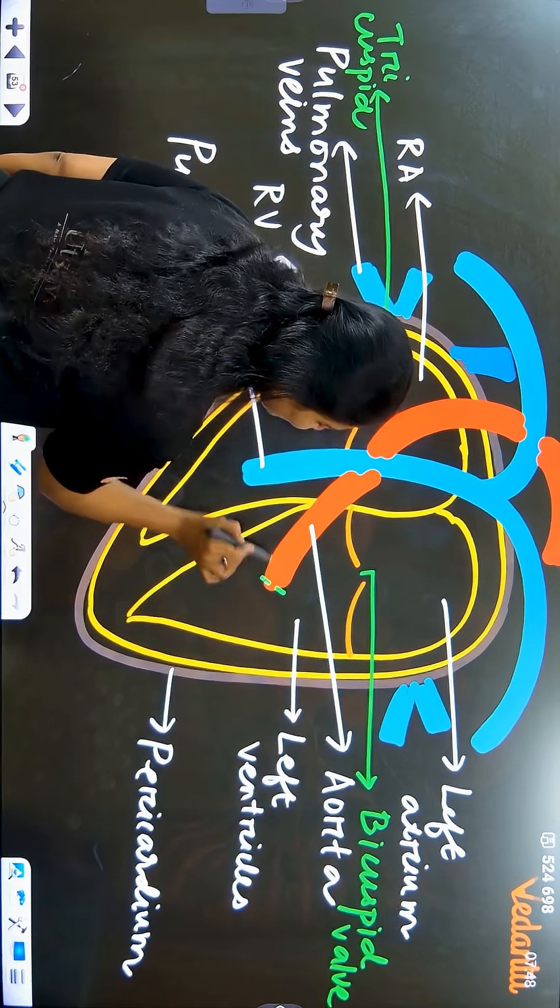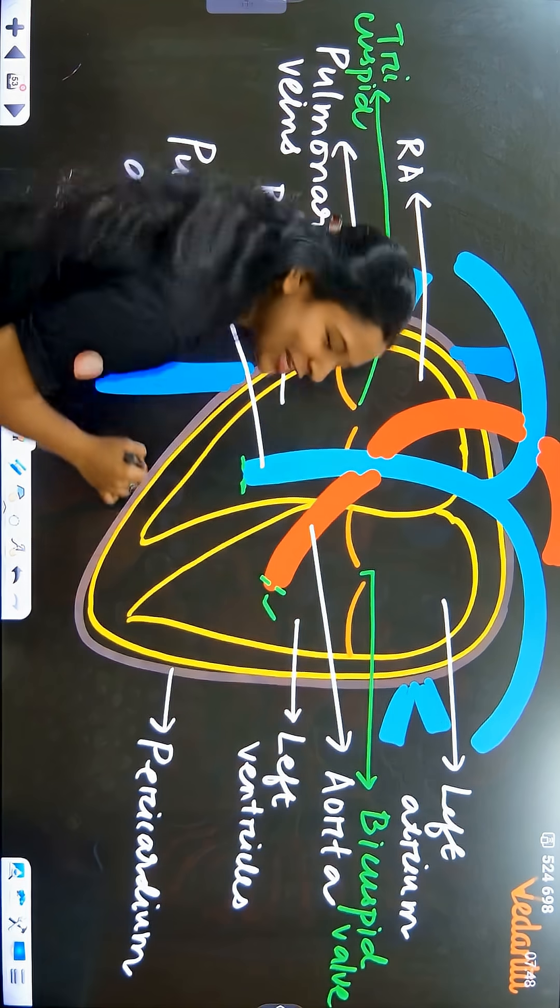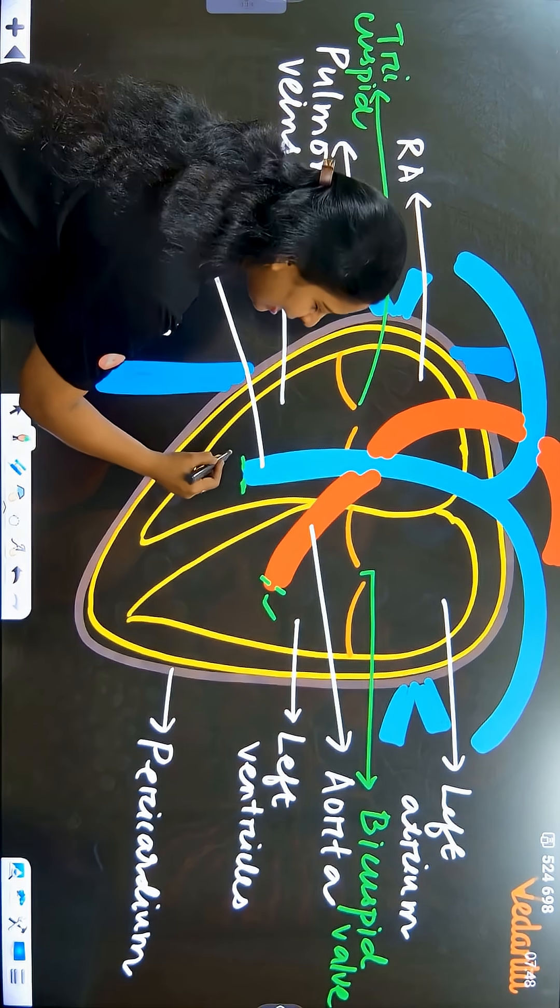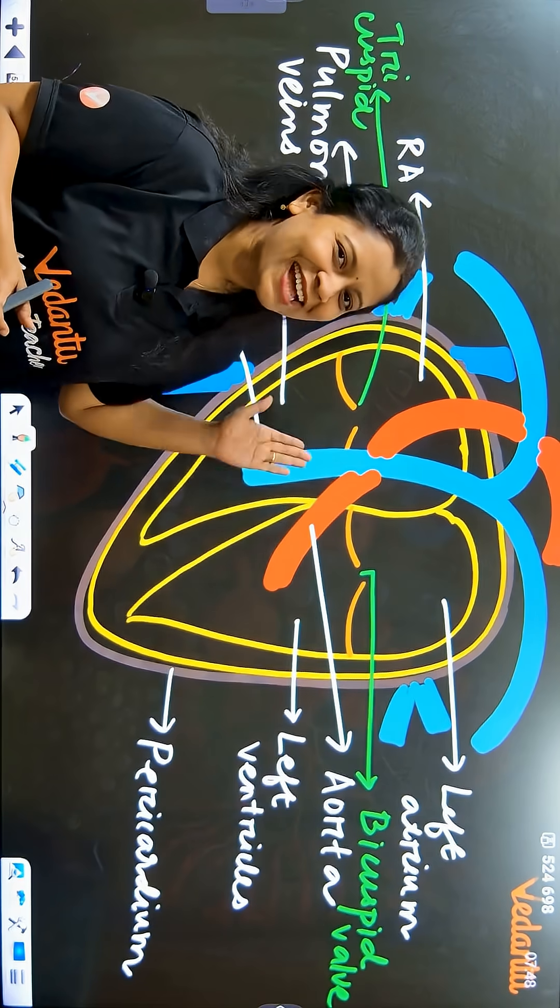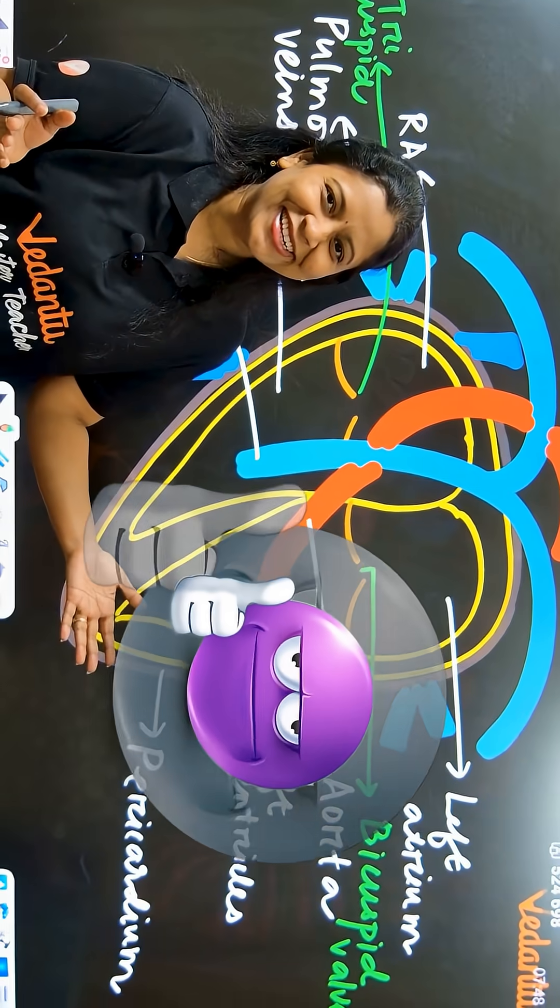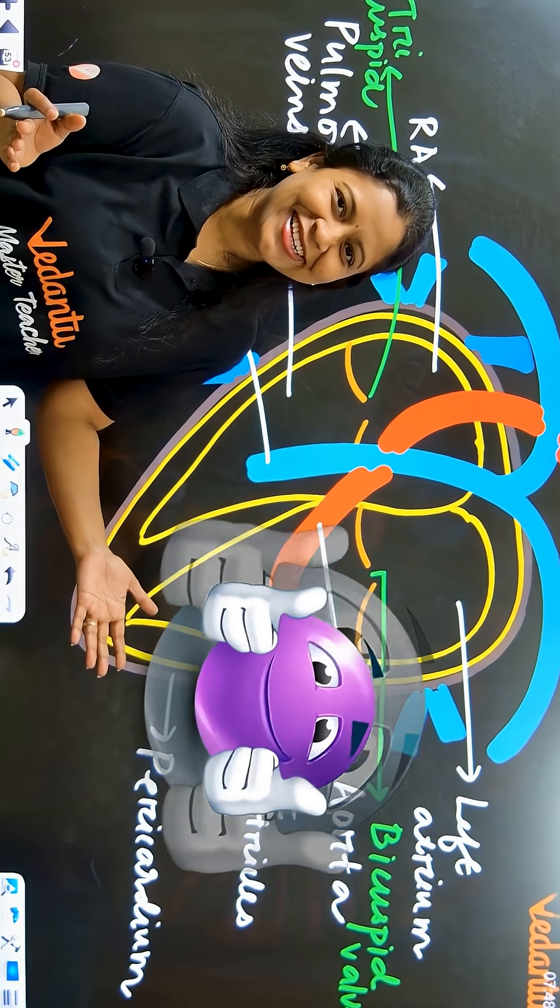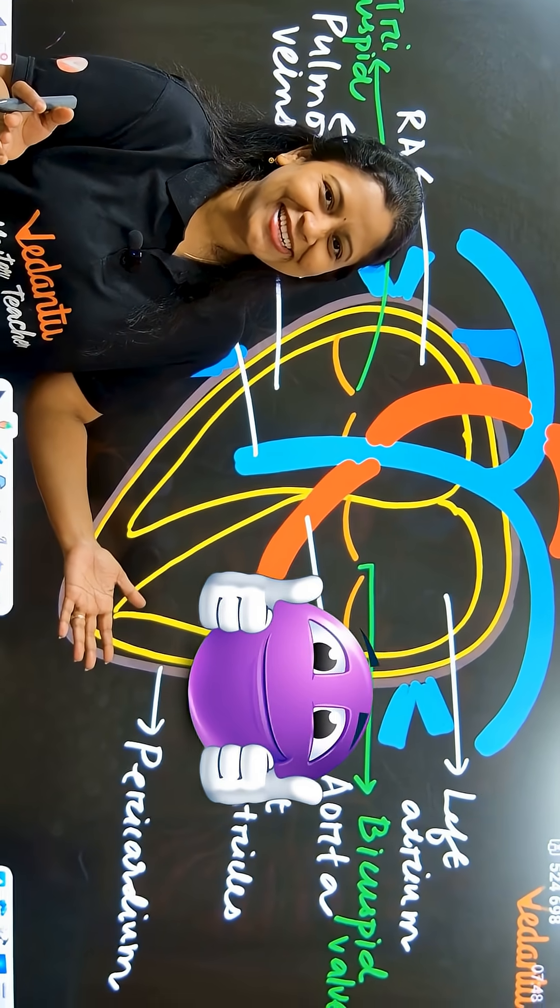Here, there are valves. So, aorta has aortic valve with semi-lunar valves. And here, there are pulmonary semi-lunar valves. That's all. The heart diagram is ready. Like and share this video!